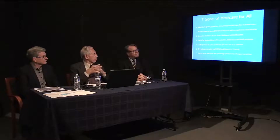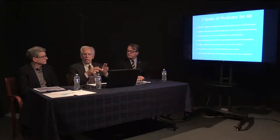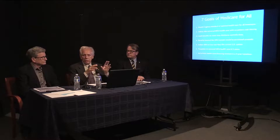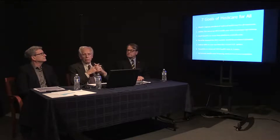Back to our goals for Medicare for All. We want to limit benefits no more than Medicare currently does. We want to have a standard level of care throughout the country for everybody in the Medicare for All programs. Number five, deliver this at less cost than the current system. We're going to show some things about comparing the cost of healthcare in the United States with the costs in other advanced countries, and we're going to see how the U.S. ranks relative to them.